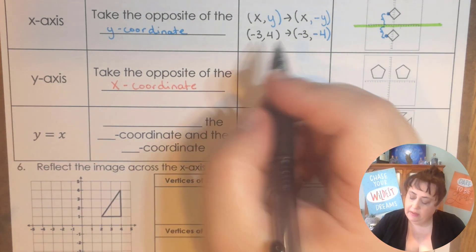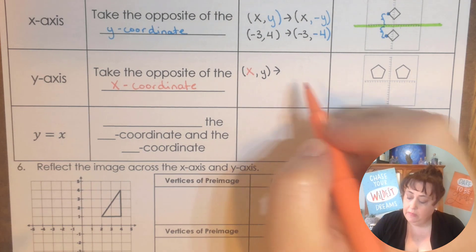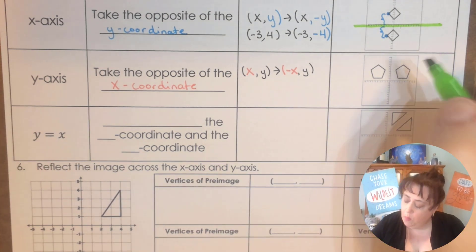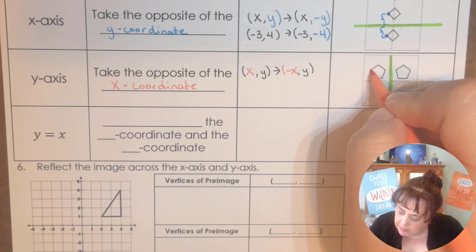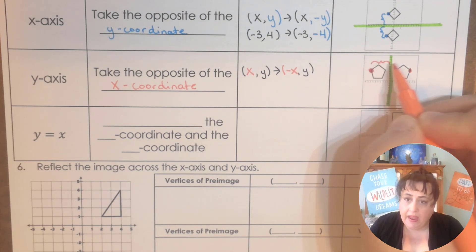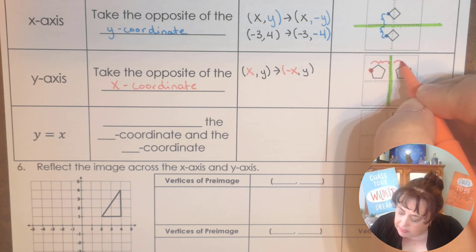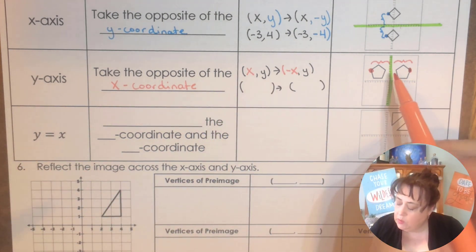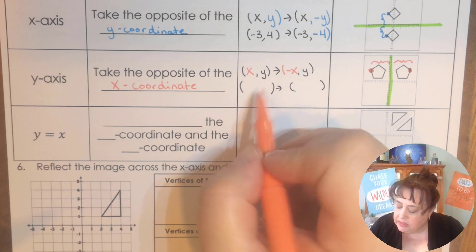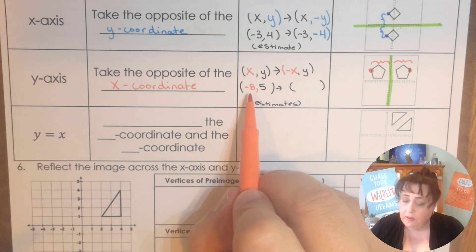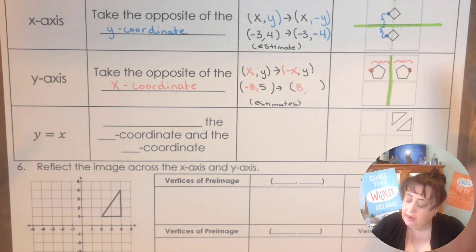For the Y-axis, we're going to start with (X, Y), but this time X does the opposite and Y stays the same. So we went around the Y-axis — if this was my X, I am that far away from my X-axis and this far from my Y-axis, and now I move over here the same distance. So if the X is negative eight and it was up five, the opposite of negative eight is positive eight, and it's still five high.